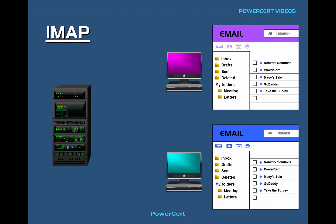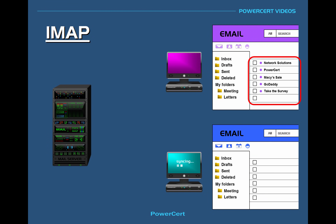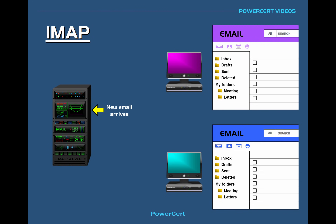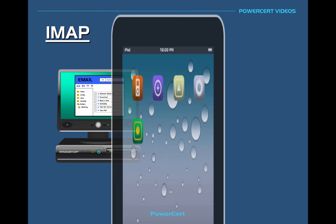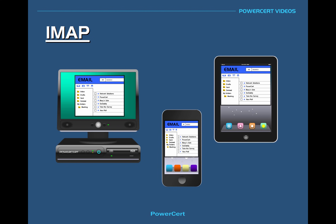If we go to the other computer and delete all the emails, all the emails on the server and the other computer will be deleted also. If any new emails come in, the email first goes to the mail server, then as the computers sync, the new email will appear on all of them. In another example, if we make a custom folder, because we're using IMAP, the folder and all of its contents will be added and synced to the other computer also. So every computer, tablet, and smartphone you have will have the exact same email and folder structure.